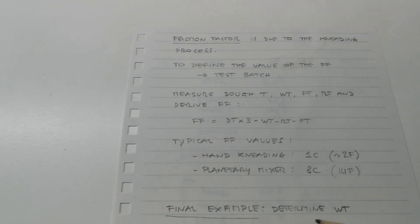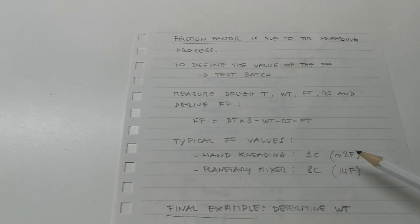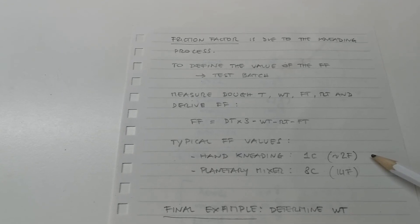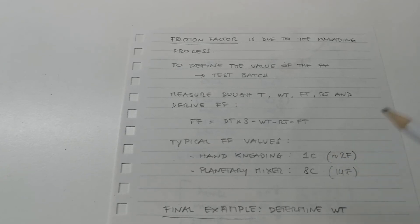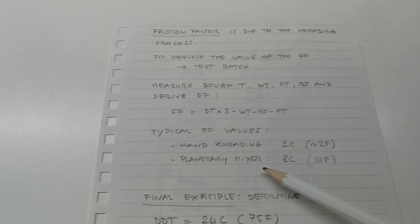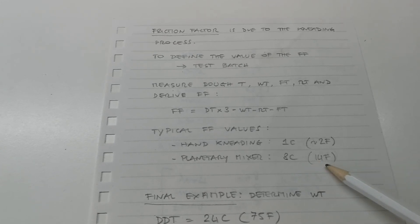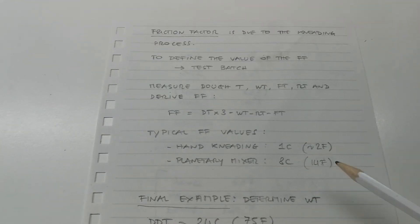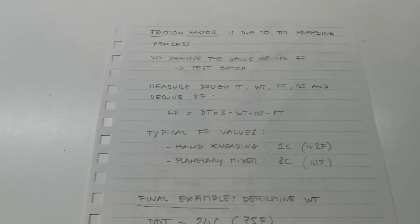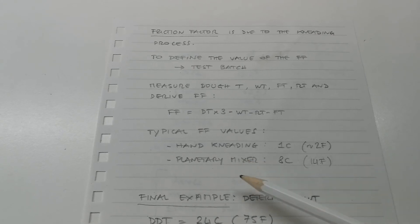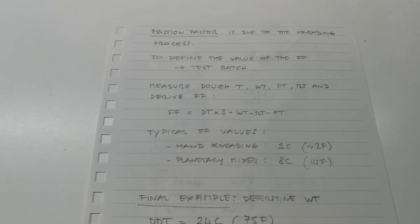Many people have done this, and we can derive typical friction factor values. Hand kneading brings a very small increase — about 1°C or 2°F. A planetary mixer generally brings an increase of about 8°C or about 14°F. Your mileage may vary, so it's highly recommended to run a test batch. Assume your friction factor is around 8°C for a planetary mixer, then measure the final dough temperature and adjust accordingly.